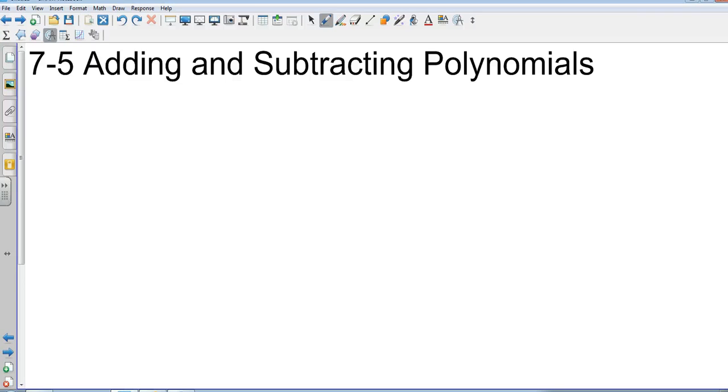OK, Algebra 1 Chapter 7-5 Adding and Subtracting Polynomials. At its very basic form, when we add and subtract anything we have to find common terms. If we add and subtract fractions we have common denominators. If we add or subtract exponents we have to have common basis. So it's the same for polynomials.